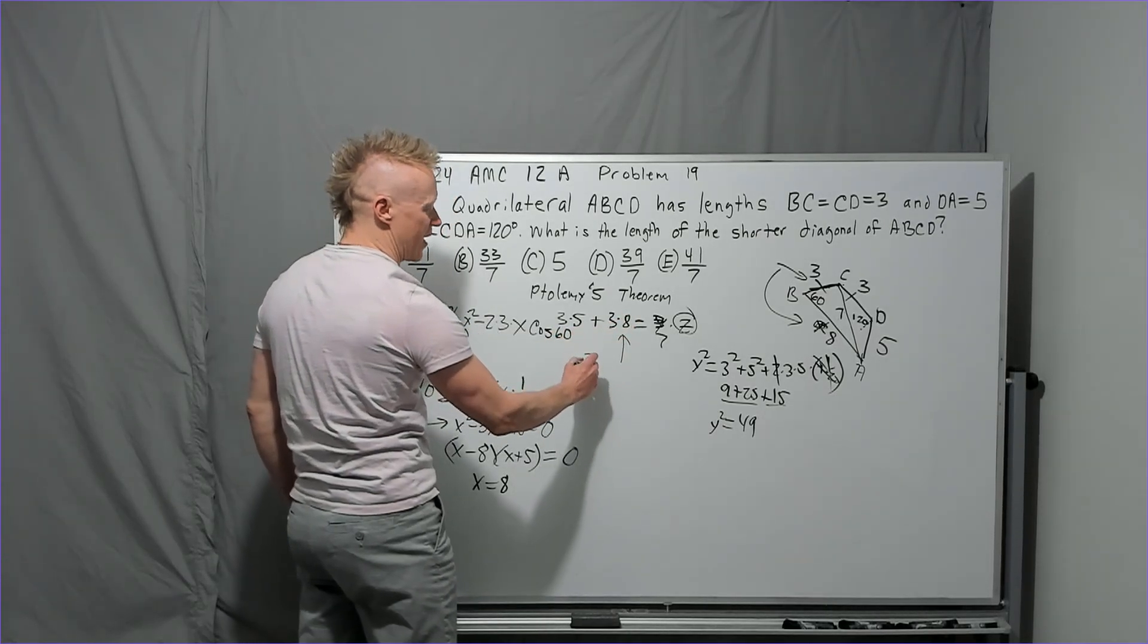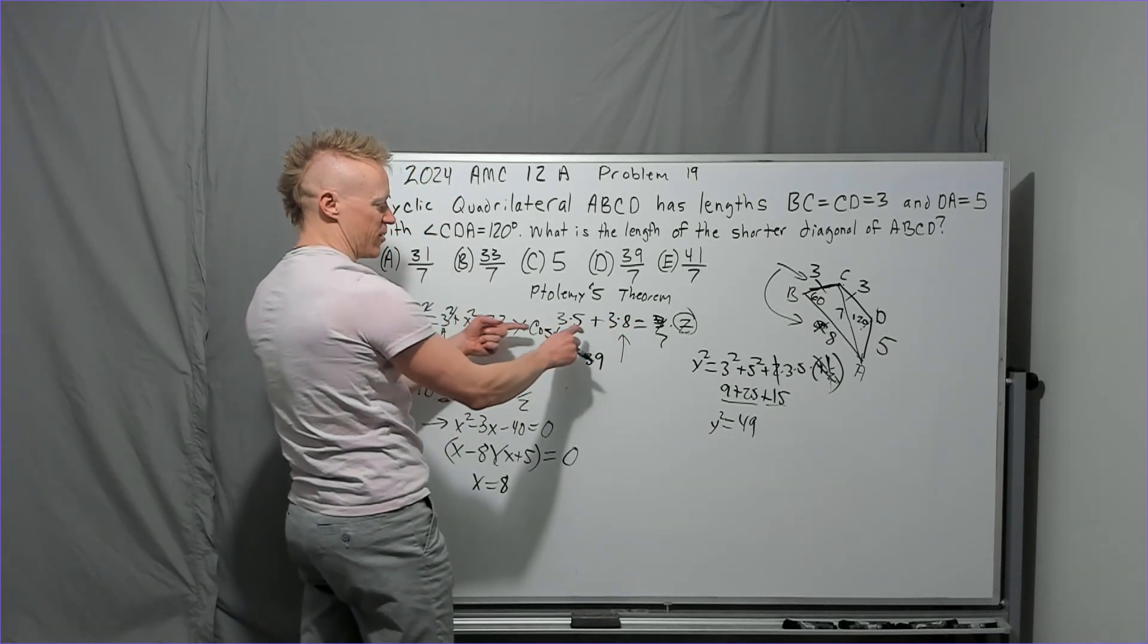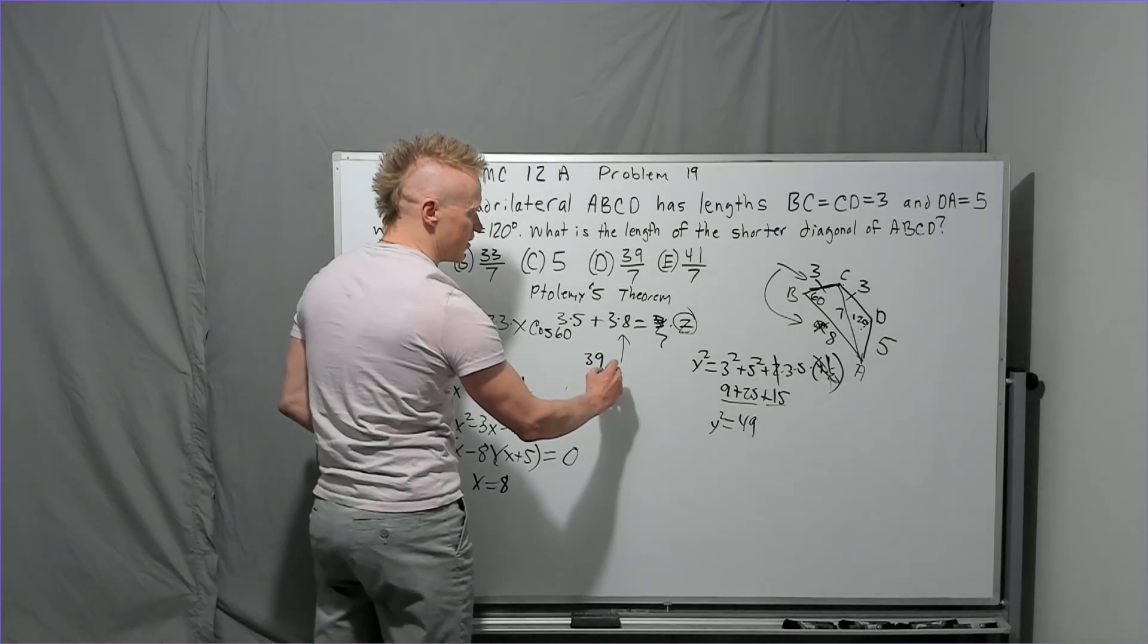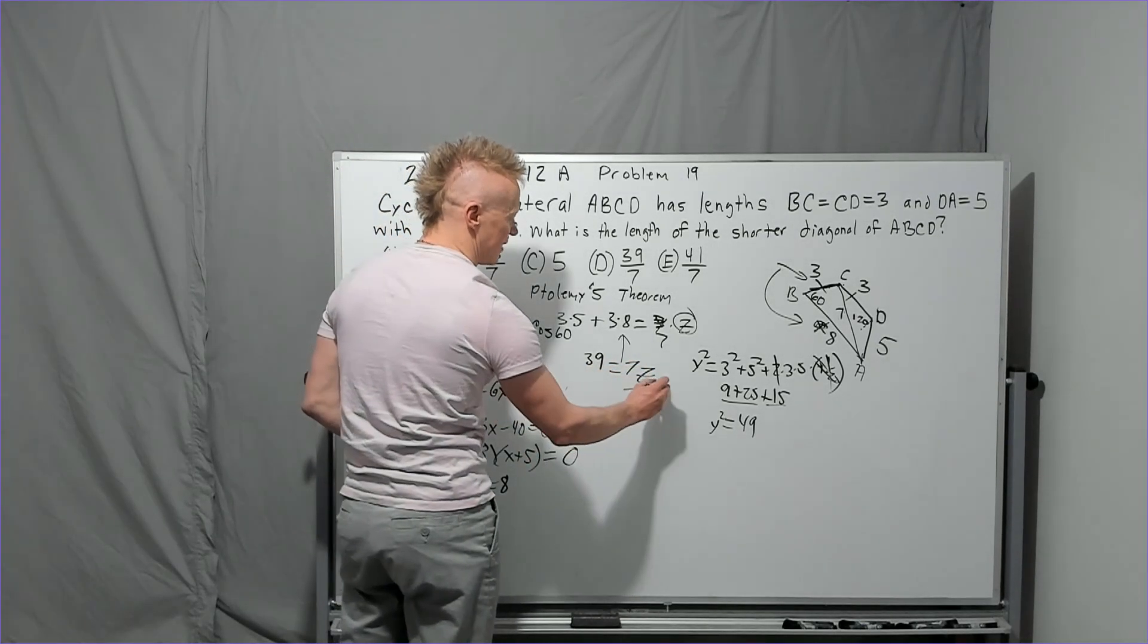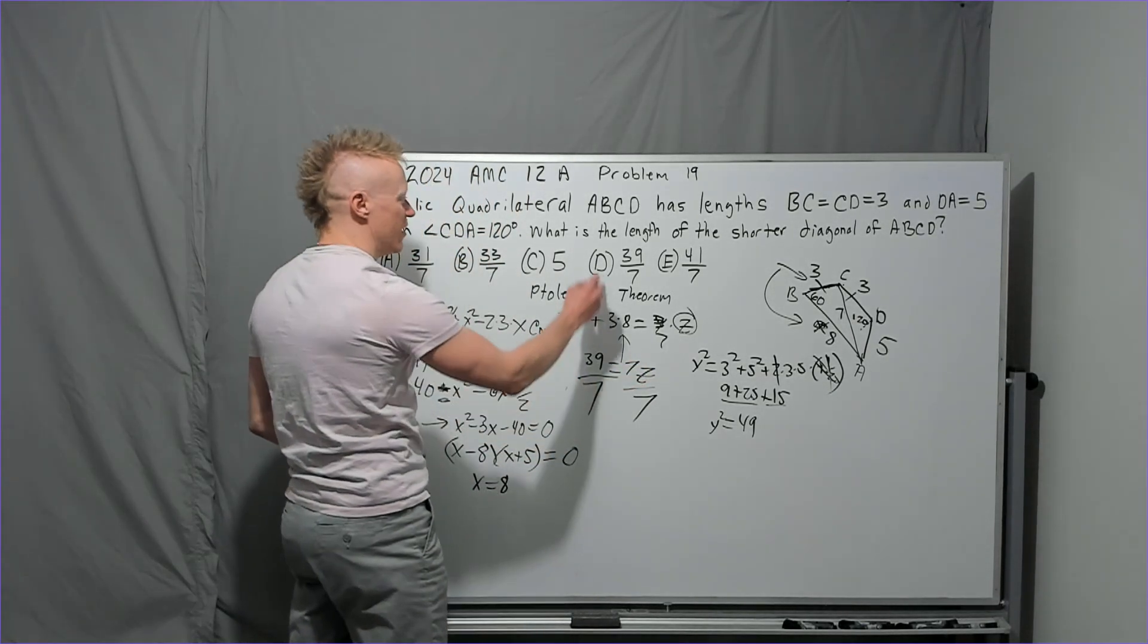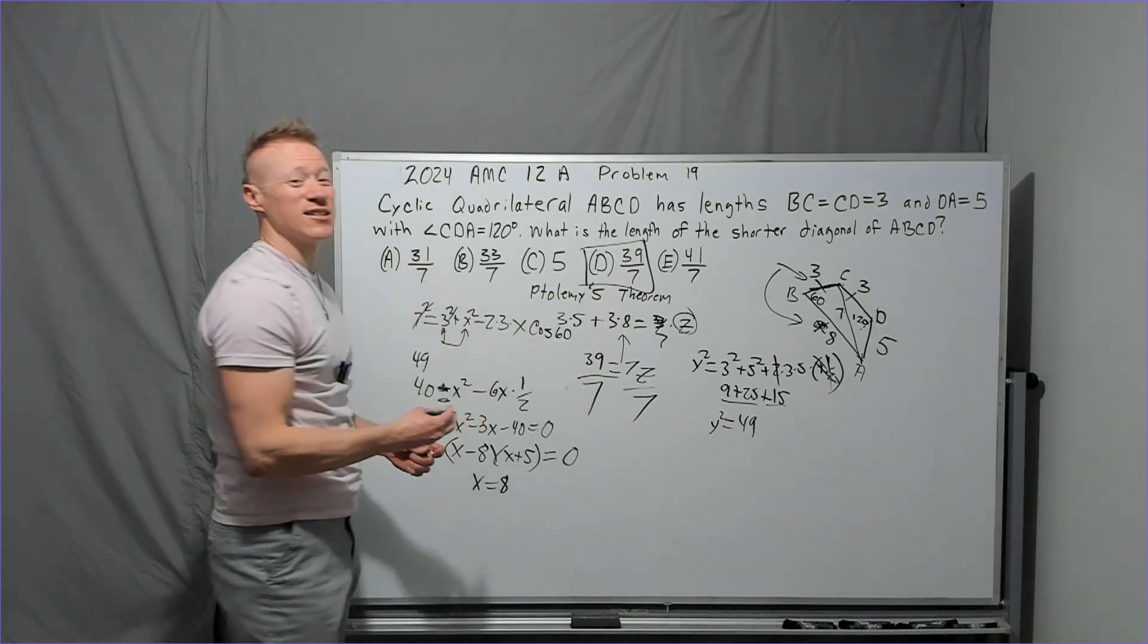And so what do you have? You have three times 13, you have 39. Factor out the three, five plus eight. So now you have 39 equals seven Z last step, divide by seven, win a prize.